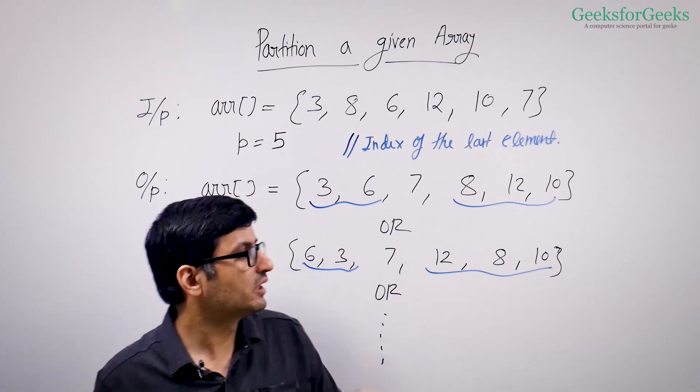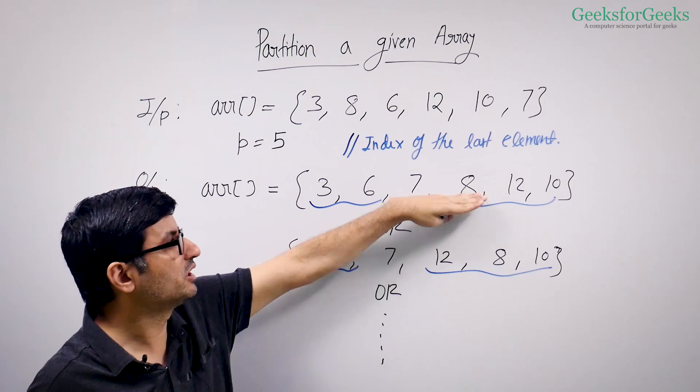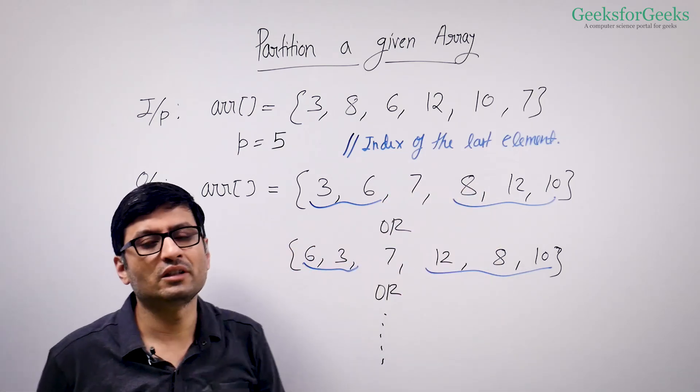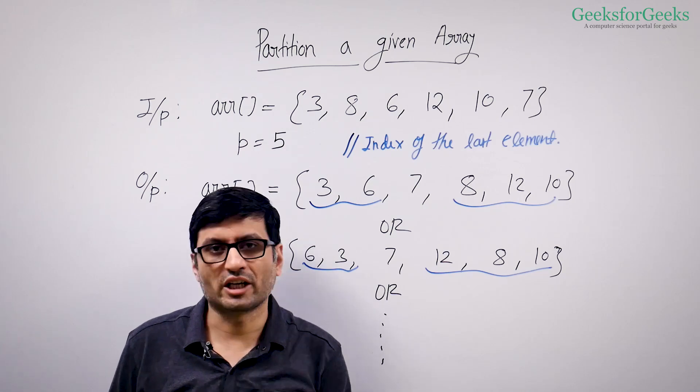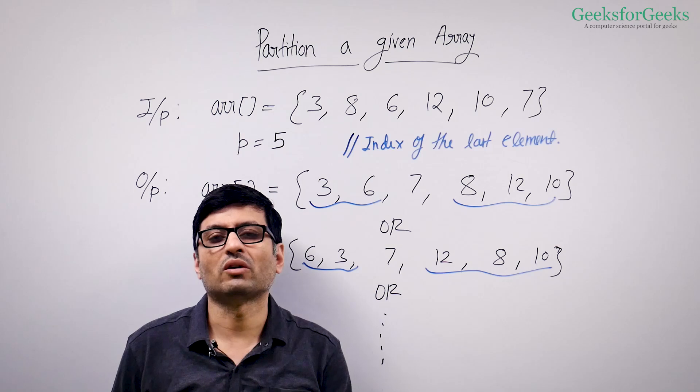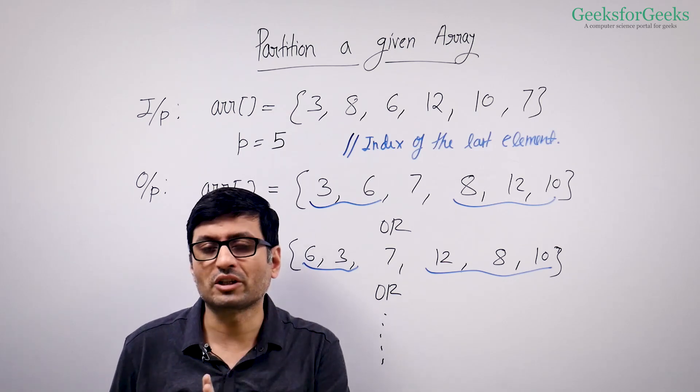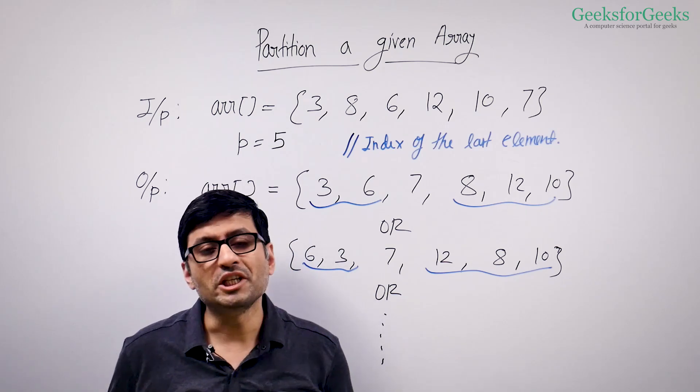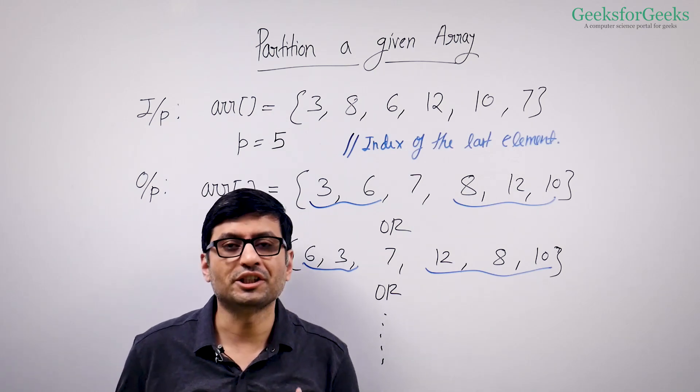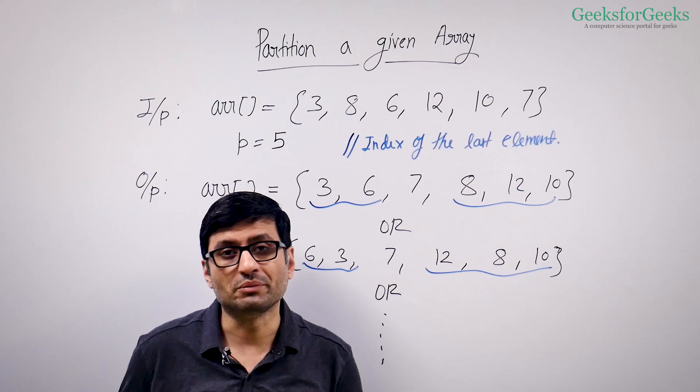So your partition algorithm can either change this array to this or this or any other array where 7 is at its correct place and all the elements before 7 are smaller and all the elements after it are greater than 7. Please pause this video and try to think of a solution that partitions the array around a given element.